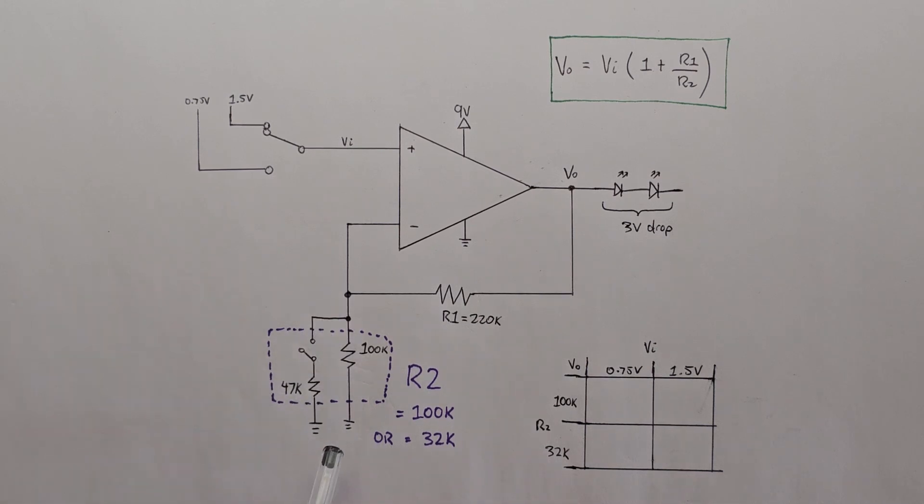There's also a resistor to ground which is 100k and a switchable 47k resistor in parallel. So when I turn on this switch, this effective resistance becomes 32k. These two resistances combined with the input voltage and the output voltage help us figure out what this circuit is going to do, and it's governed by this equation.